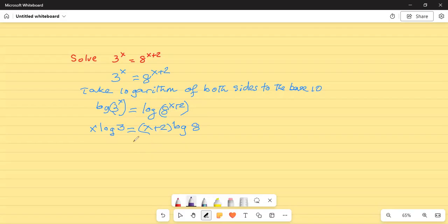So, this side becomes x times logarithm of 3 is equal to x plus 2 logarithm of 8. Now, let's divide by logarithm of 3 on both sides.